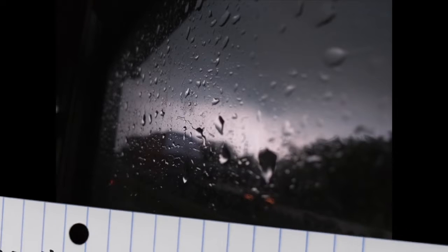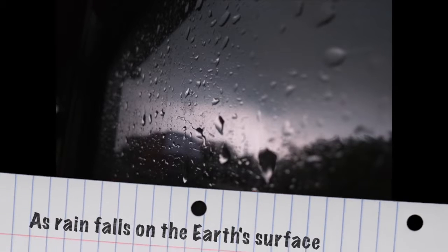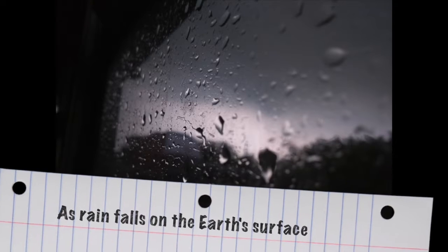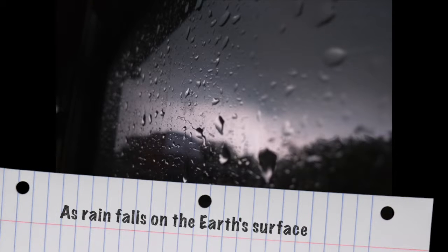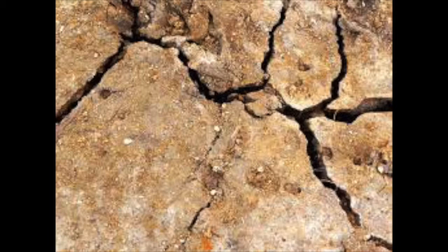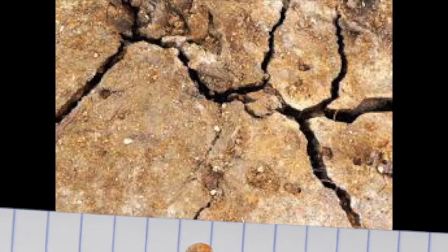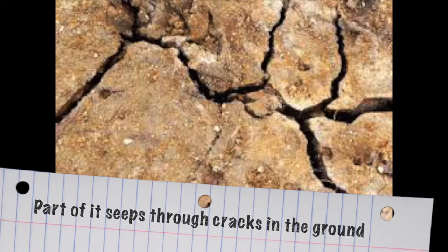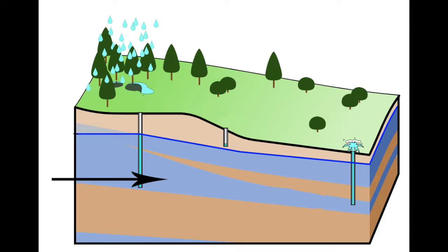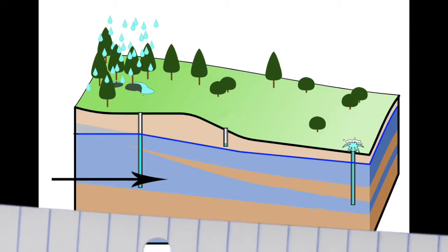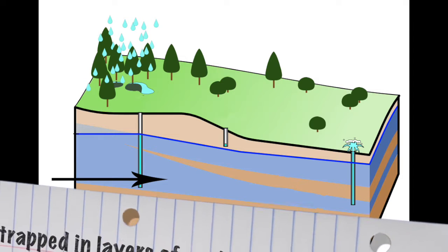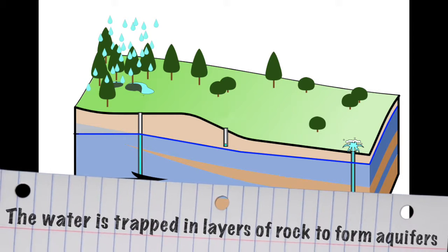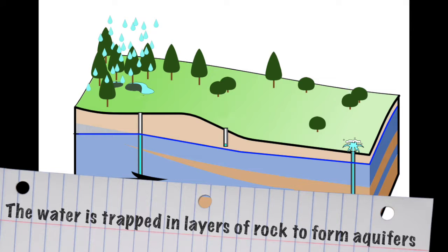As rain falls on the Earth's surface, part of it seeps into the Earth, passing through porous layers of rock. This continues until water is trapped in layers of rocks to form aquifers.